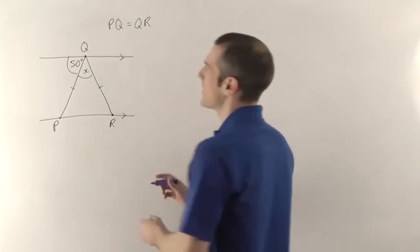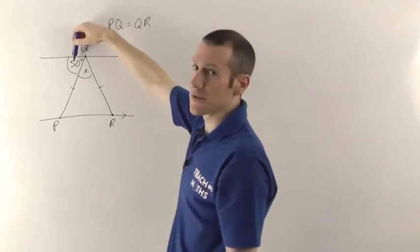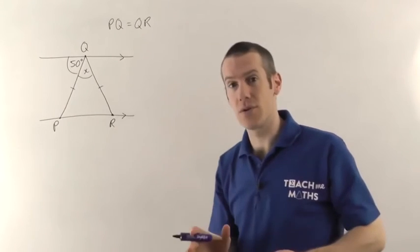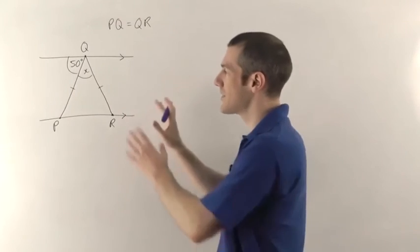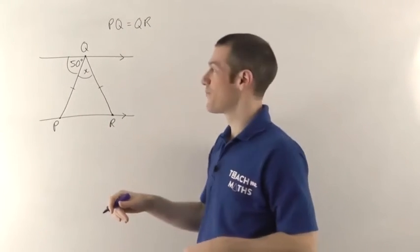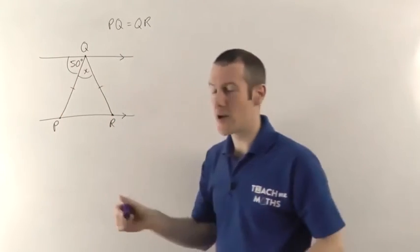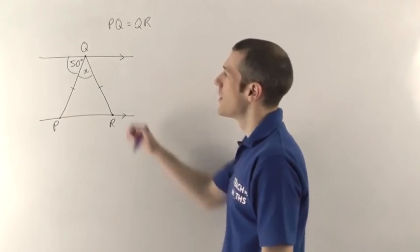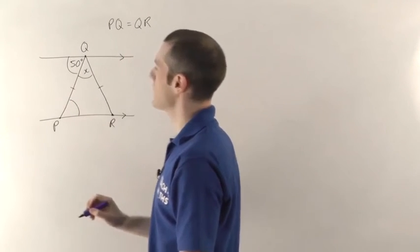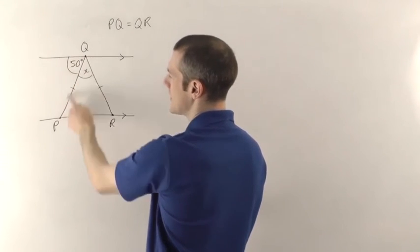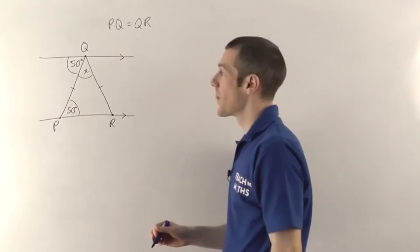At first you might think: I've got a straight line, so those angles add up to 180. But we don't know what that one is — and you can't just assume because it looks the same that it is. You need to use an angle fact. Because I've got parallel lines, this angle and the 50 sit inside a Z shape, so they're alternate angles — meaning that angle must be 50 degrees.